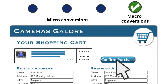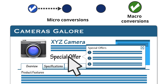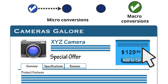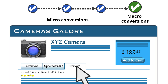A micro conversion is also an important action, but it does not immediately contribute to your bottom line. It's usually an indicator that a user is moving towards a macro conversion. It's important to measure micro conversions because it helps you better understand where people are on the journey to conversion.